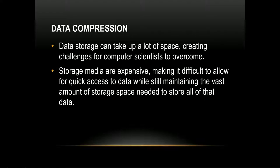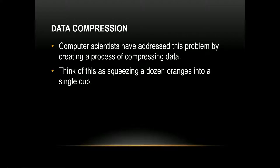This is where data compression comes into play. Because data takes up lots of space, we have to have a way to shrink or compress it. Data scientists came up with the process of compression so that we can squeeze large chunks of data into a smaller space. The normal analogy is: we can take lots of oranges and fit them into one cup by squeezing out the fluid, being left with orange juice.